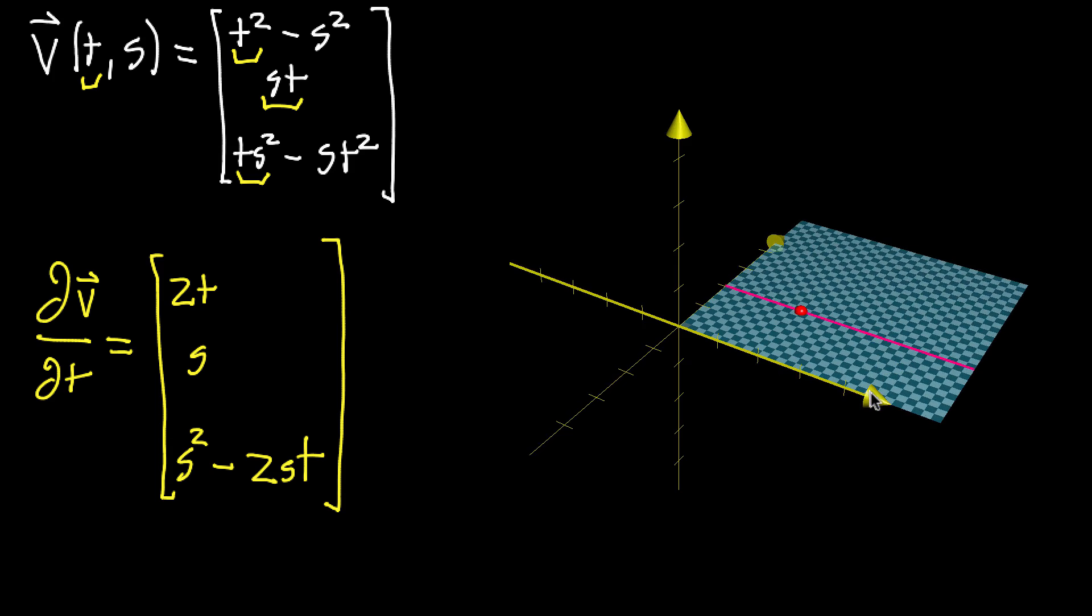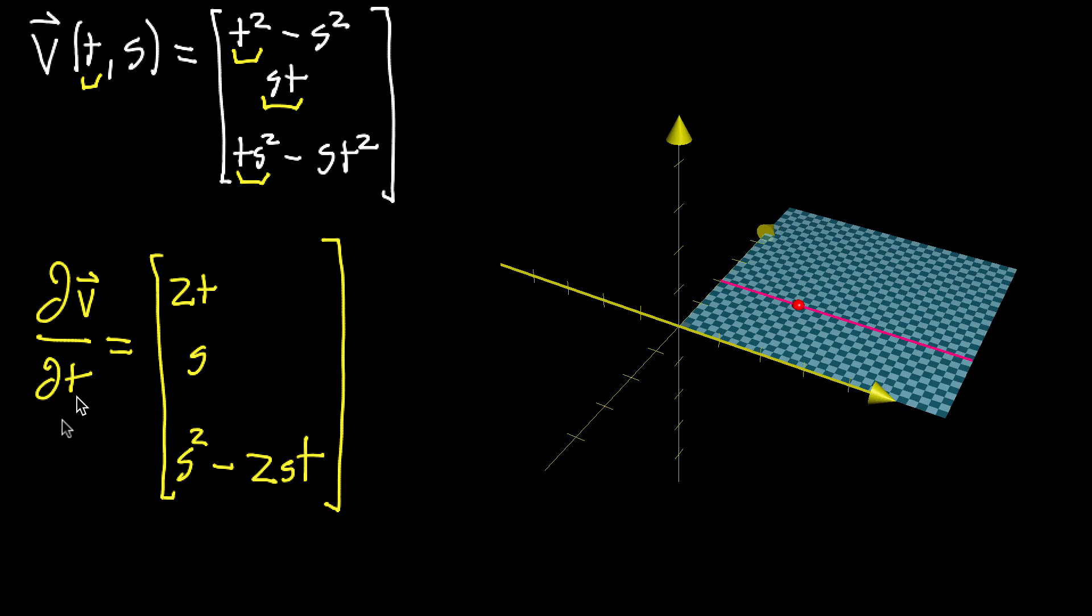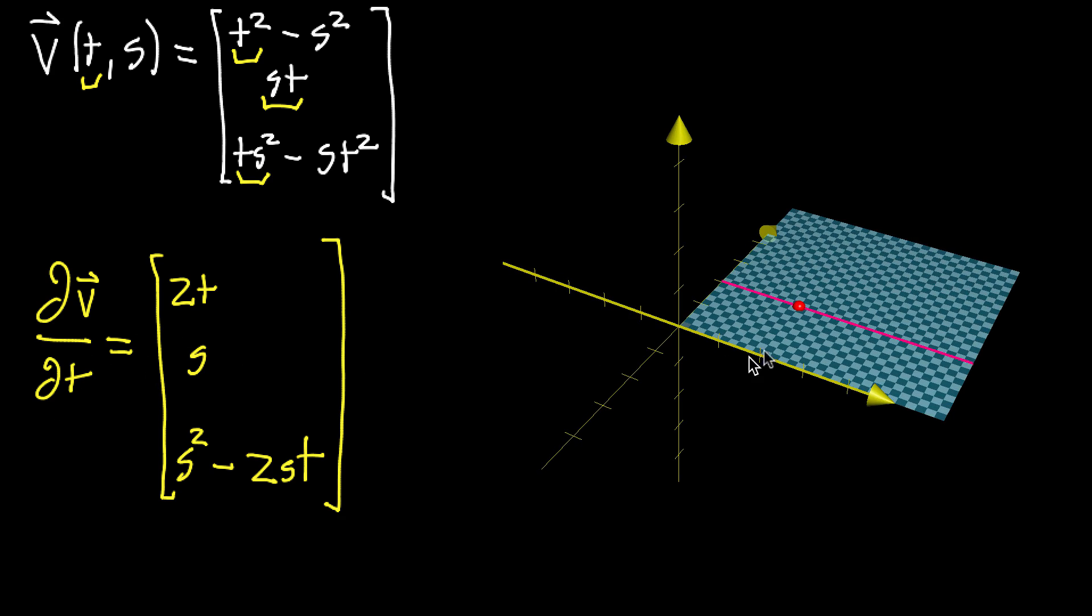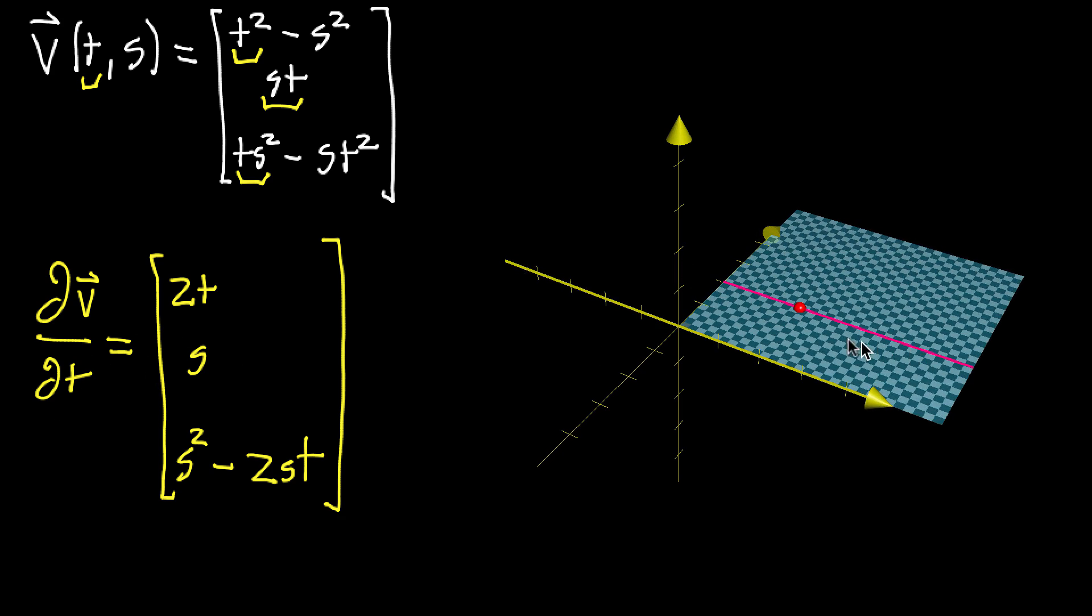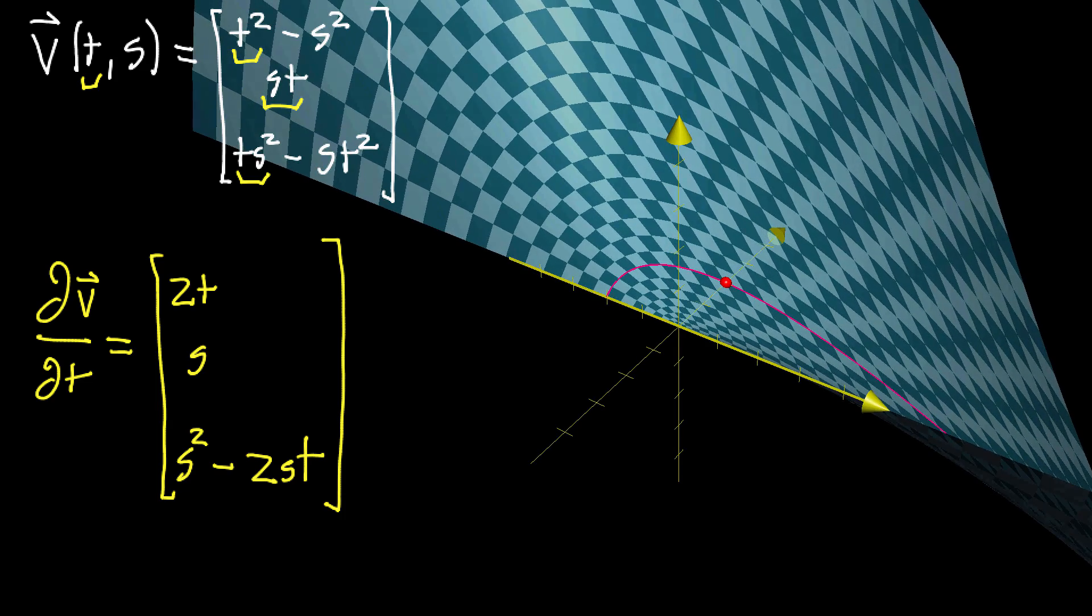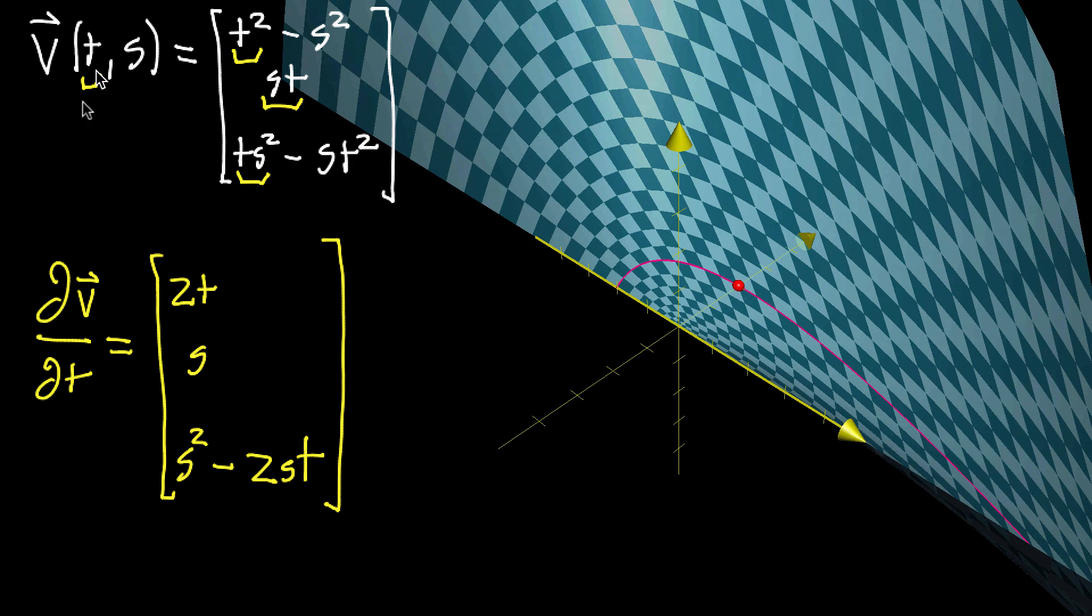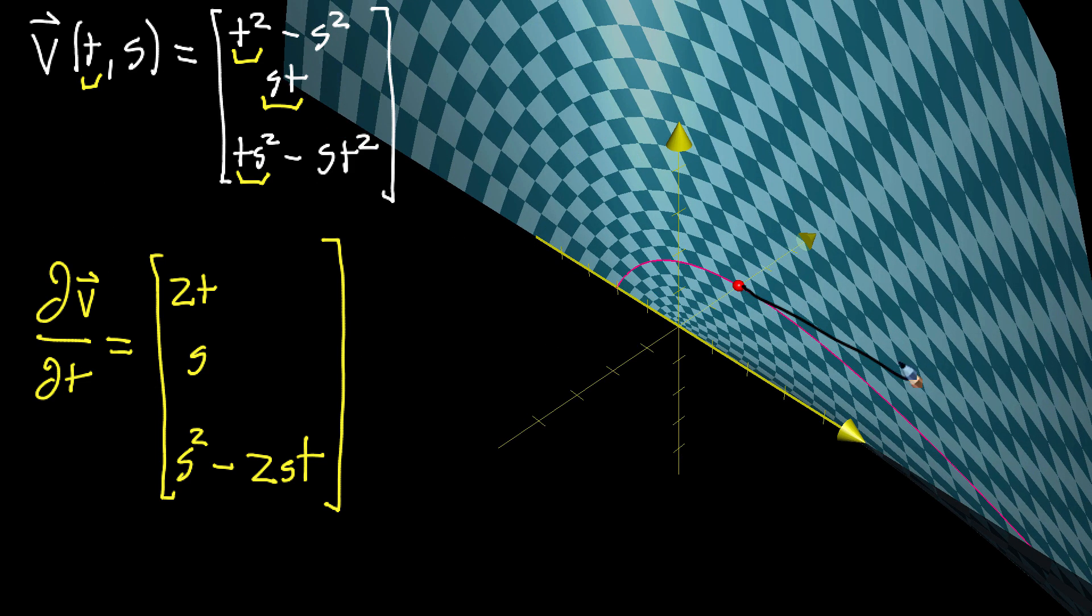We're thinking about the square as T and S each ranging from zero to three. For the partial derivative with respect to T, you imagine the line that represents movement in the T direction and see how that line gets mapped as all the points move to their corresponding output. The partial derivative vector gives you a tangent vector to the curve representing that line, which corresponds to movement in the T direction. The longer it is, the faster the movement and the more sensitive it is to nudges in T.